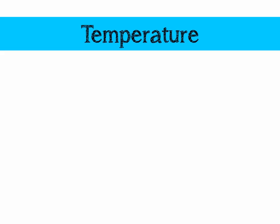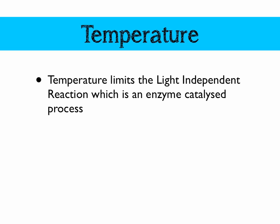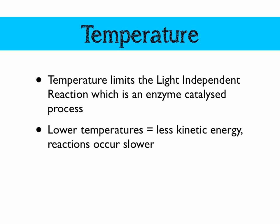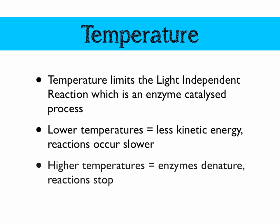Finally, we're going to talk about temperature. Temperature limits the light independent reaction because it's an enzyme-catalyzed process. Lower temperatures mean less kinetic energy, which means that the reactions occur slower. Higher temperatures mean that enzymes will denature and the reactions will stop happening altogether.